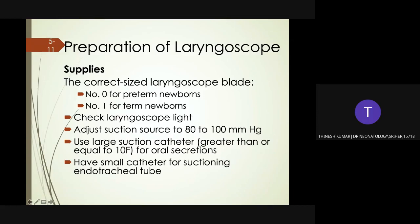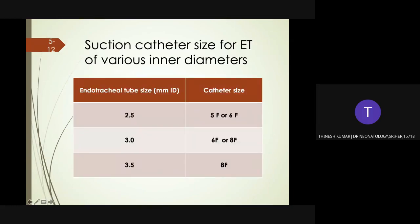Preparation of laryngoscope: select the correct size laryngoscope blade — number zero for preterm babies, number one for term babies, and double zero for extremely preterm babies. Check whether the laryngoscope blade is working. Adjust the suction source to 80 to 100 mmHg. Use a large suction catheter of 10 French or greater for oral suction. For ET tube suctioning: 5 or 6 French for 2.5 mm ET tube, 6 or 8 French for 3.0 mm, and 8 French for 3.5 mm ET tube.